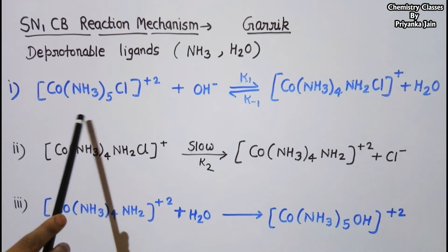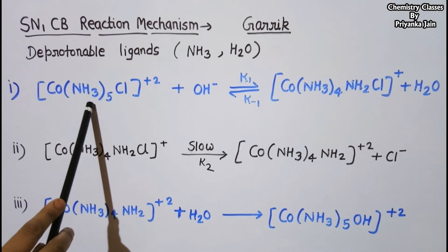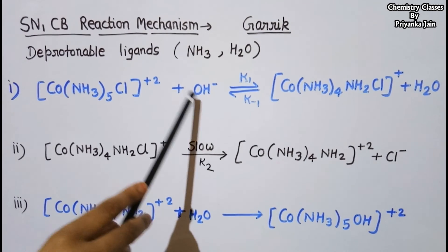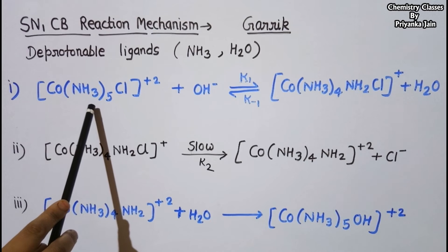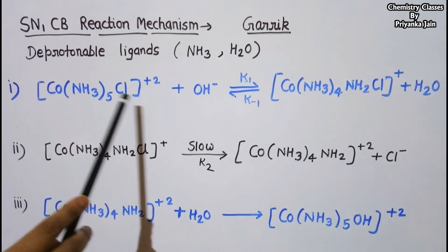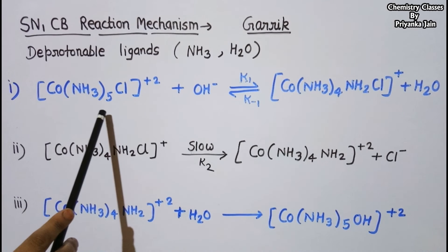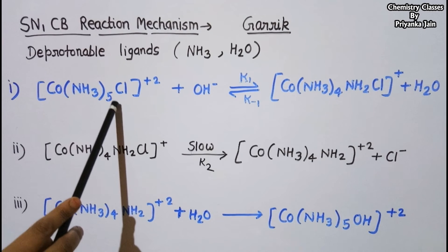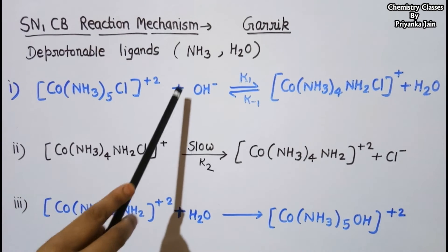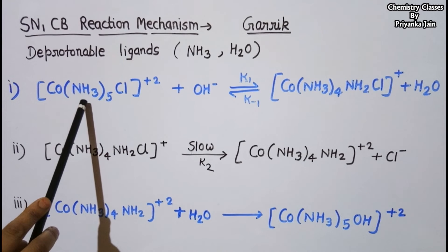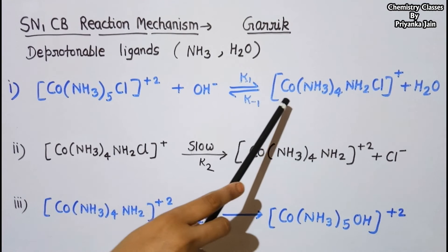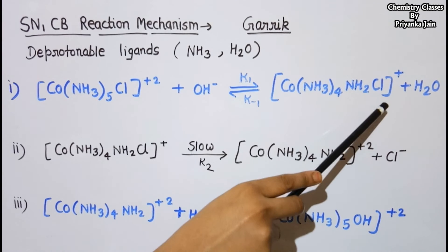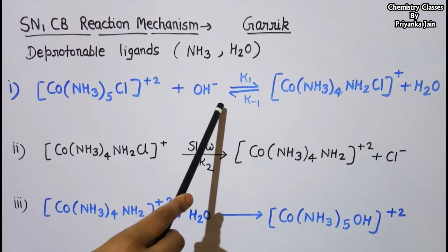In step one, the OH⁻ ion acts as a strong base and abstracts a proton from one of the ammonia ligands — specifically from the NH₃ ligand that is trans to the Cl⁻ ion. As a result, one NH₃ ligand is converted to NH₂⁻, giving the complex [Co(NH₃)₄(NH₂)Cl]⁺ and one molecule of water. This step is reversible.